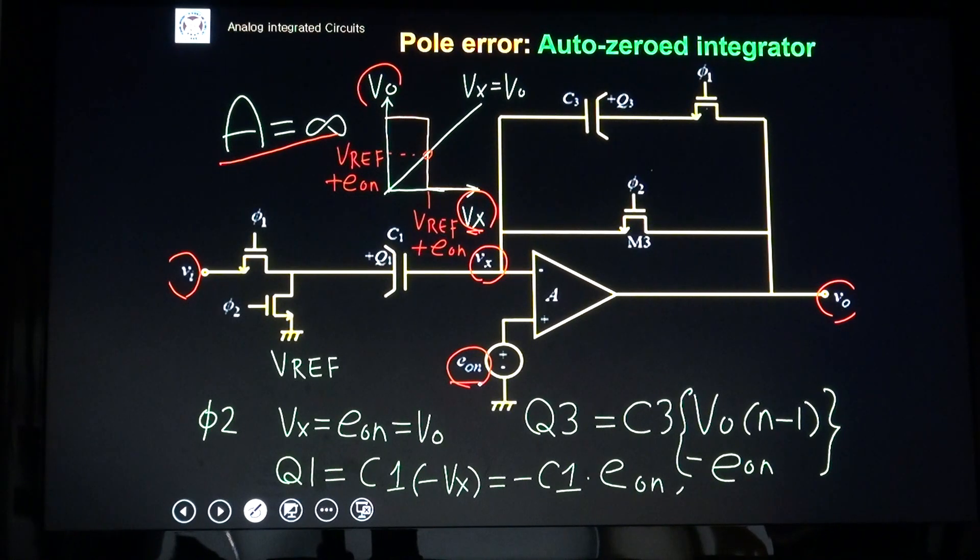if I short, if M3 turns on during φ2, VO is same as Vx, then the operating point is Vref plus EON. This Vref is defined to be zero, zero volt. This is a reference Vref.